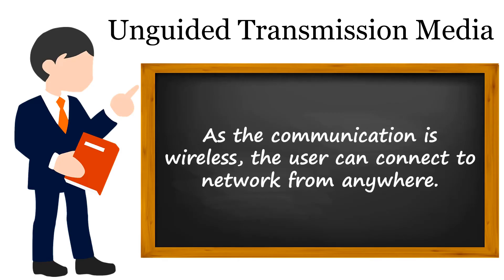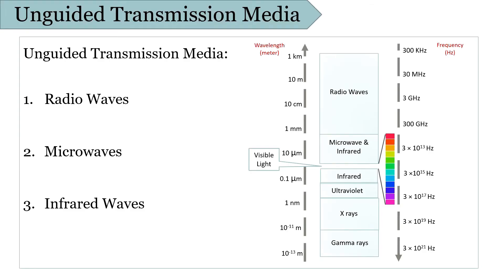A user with a capable device can connect to the network from anywhere, anytime. The unguided transmission media is further categorized into three subcategories: radio wave, microwave, and infrared wave. Radio waves are low frequency signals and can travel a long distance. As they are low frequency signals, they can easily penetrate buildings or any obstacle. Thus, they are usually used to send radio signals.